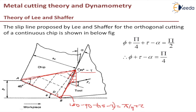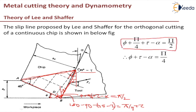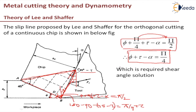Since this angle is φ, the total angle becomes φ + π/4 + τ. To equate it to π/2, we subtract the small angle α. So: φ + π/4 + τ − α = π/2. That is how the equation is derived. Rearranging, we get: φ + τ − α = π/4. This is the required shear angle solution.